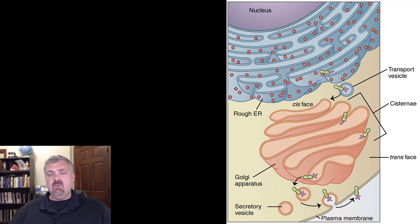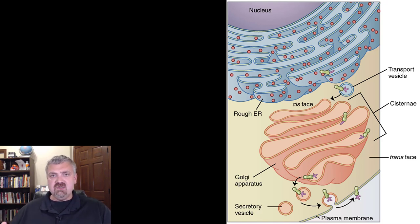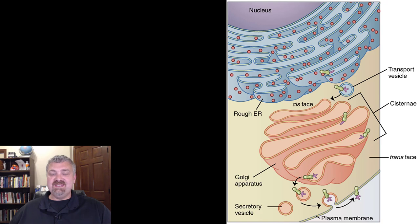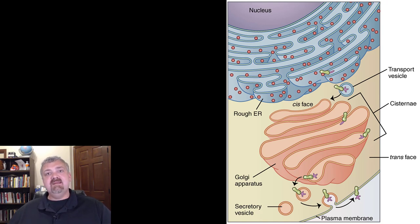We'll get into more details of protein synthesis when we talk about transcription and translation, but I wanted to give you a background on the locations and basic functions of these organelles. That should be everything you need to know about the nucleus, rough and smooth ER, and the Golgi complex — Golgi apparatus, Golgi body. There are so many different ways to say it; I didn't make up the words. I truly hope this helps. Have a wonderful day. Be blessed.